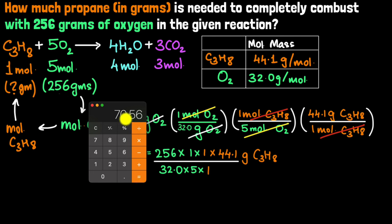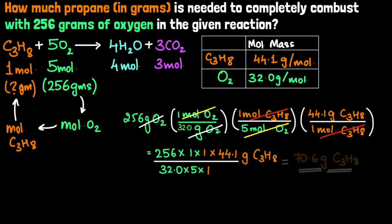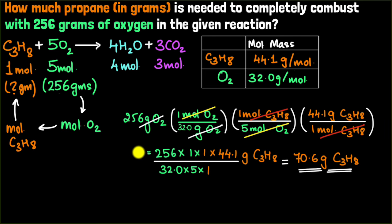We need to round to three significant figures because that's the least number of significant figures in our data. Rounding gives us 70.6 grams. So 70.6 grams of propane is necessary to completely combust with 256 grams of oxygen.